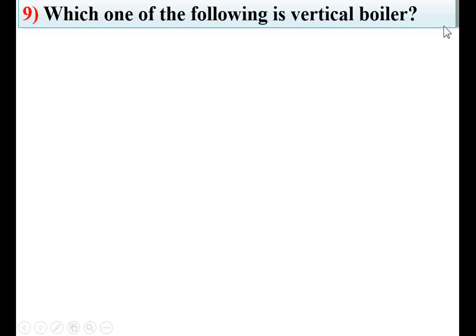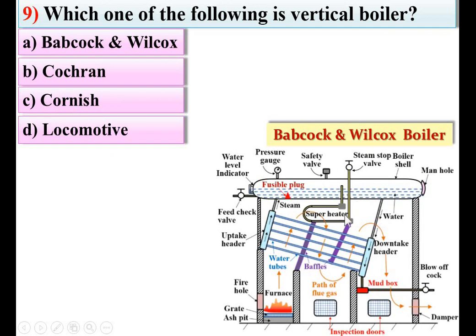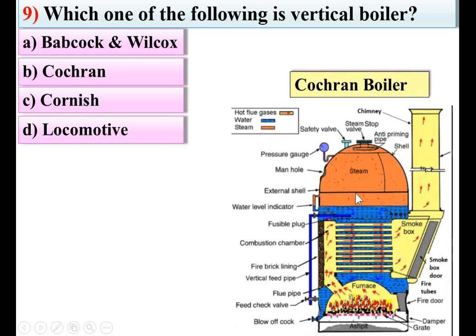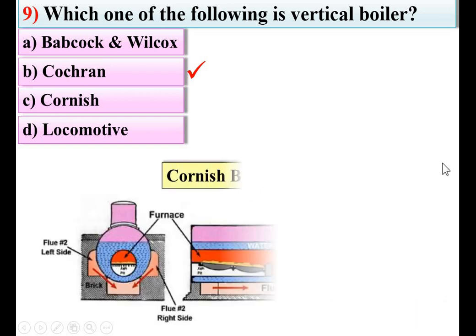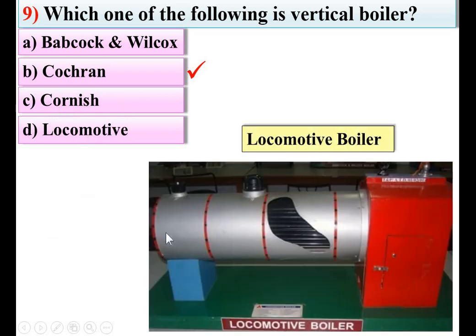Which one of the following is a vertical boiler? Options: Babcock and Wilcox, Cochran, Cornish, locomotive. Checking each: in the Babcock and Wilcox boiler the shell is in a horizontal position — so it is a horizontal boiler. In the Cochran boiler the shell is in a vertical position, so it is known as a vertical boiler. The Cornish boiler shell is also horizontal, and the locomotive boiler shell is also horizontal. So Cochran — option B — is the right answer.